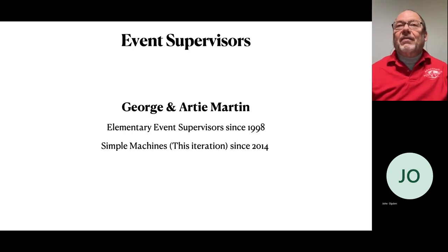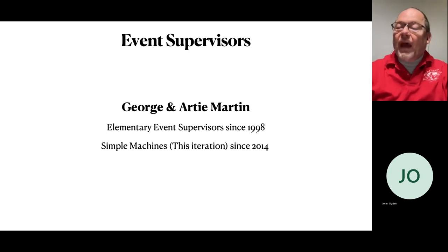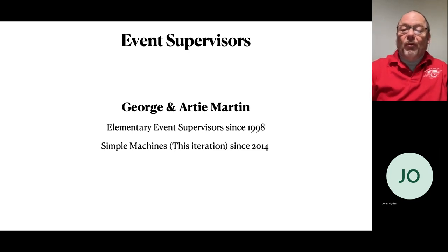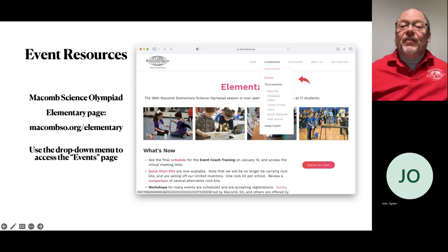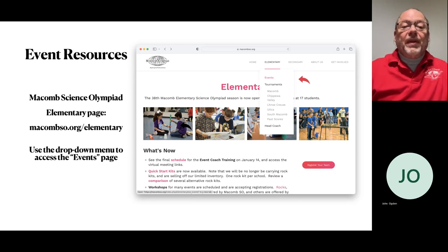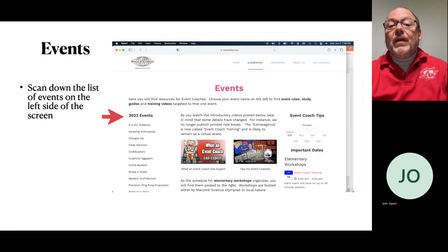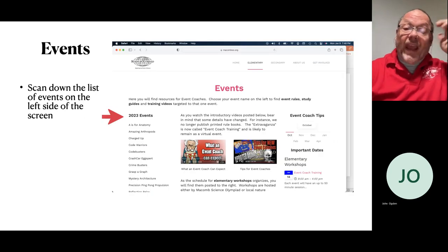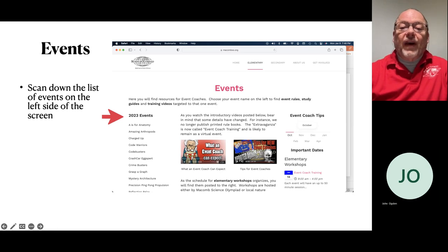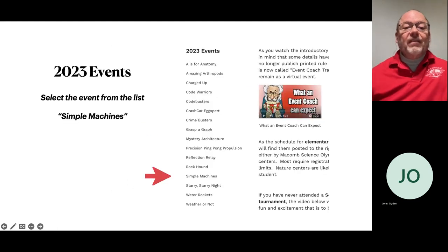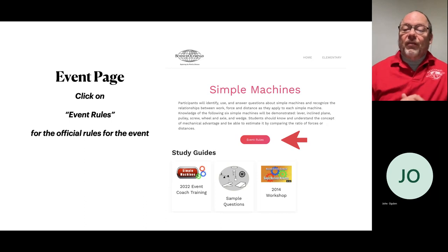If you coached this event over the last couple two or three years, I will tell you right now that nothing has changed, but we'll go through it anyway. As an event supervisor, I recommend that first you go to the Science Olympiad Elementary page. Use the drop-down menu under Elementary and click on Events. On the left side of the page, scan down on the events until you find Simple Machines and click on that.